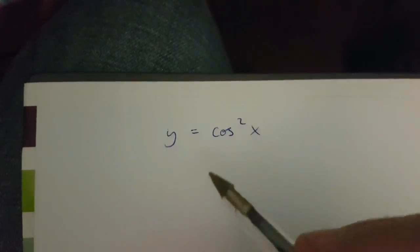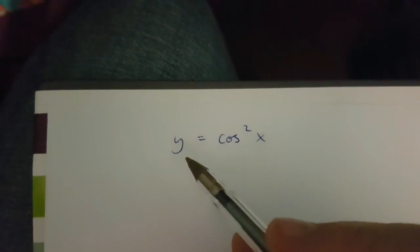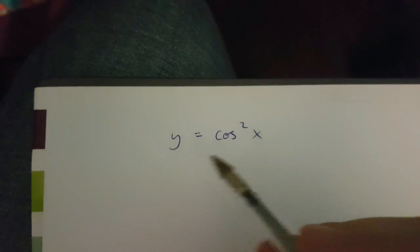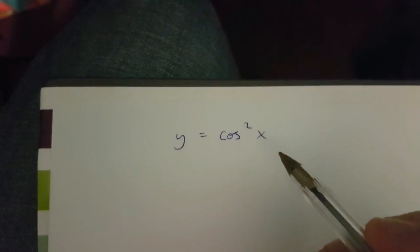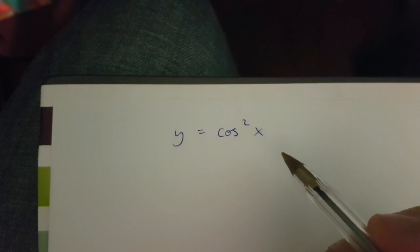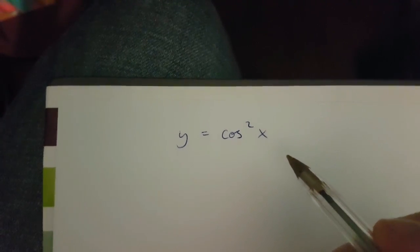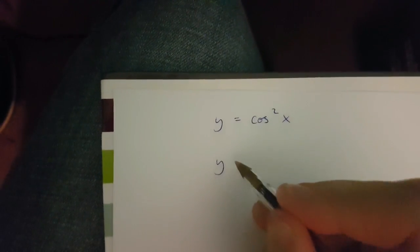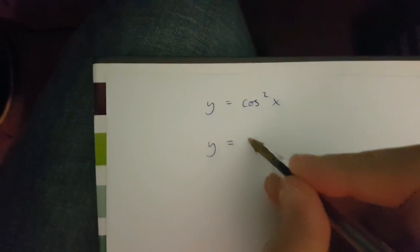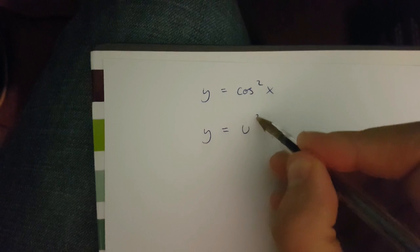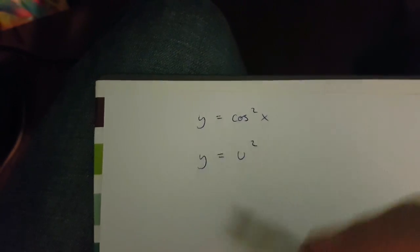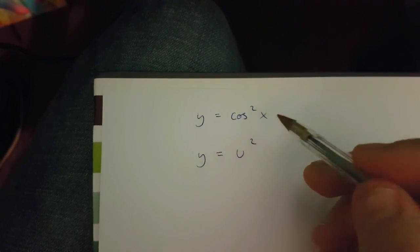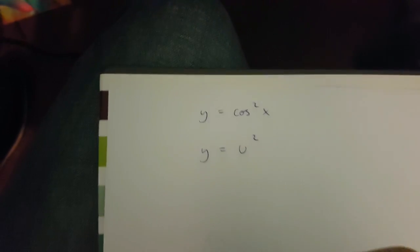Hi, in this video I'm going to be showing you how to differentiate y equals cos x squared using the chain rule. First of all I'm going to say this is equal to u squared, where u is actually cos x.